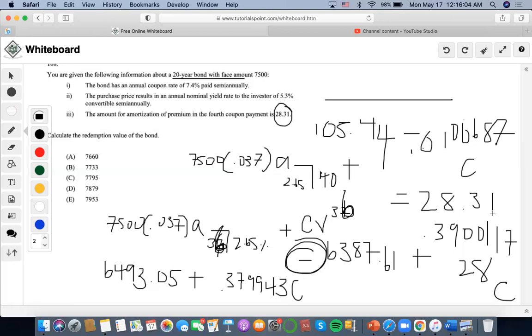divided by negative 0.0100687, and I'm going to get $7,660.37 as C, which represents the redemption value. Yes, okay.